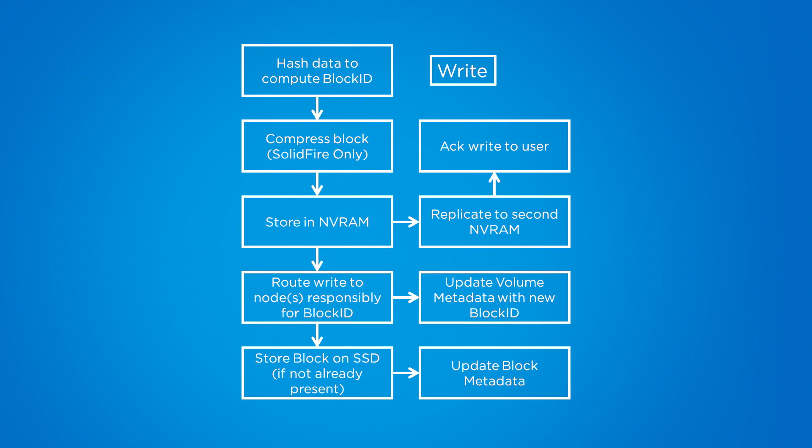For writes, the block data is first hashed before anything else is done with it. Then for SolidFire, we compress it and store the entire thing in NVRAM. Once the block has been replicated to a second NVRAM instance and is protected against power failure, the write is acknowledged back to the user. From NVRAM, the write is routed to the node responsible for the block ID and the volume metadata is updated. Finally, the block itself is written to SSD assuming it doesn't already exist elsewhere, and the block metadata is updated as well.